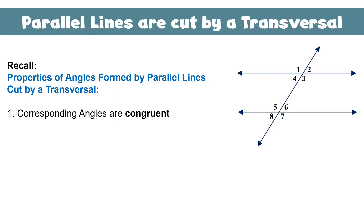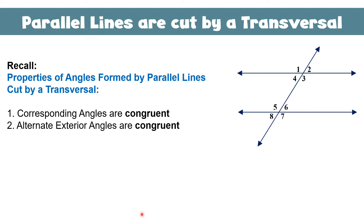The first property: corresponding angles are congruent. For example, angles 1 and 5 are corresponding, so they are congruent. The second property: alternate exterior angles are congruent. In the figure, alternate exterior angle pairs are 1 and 7, and 2 and 8.